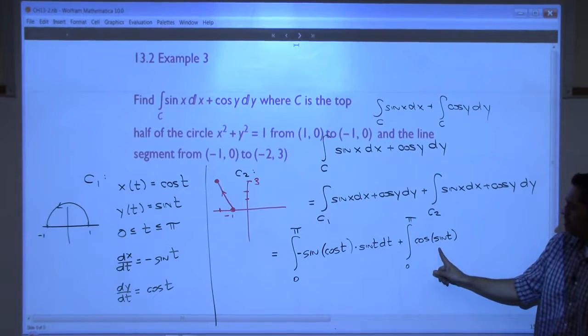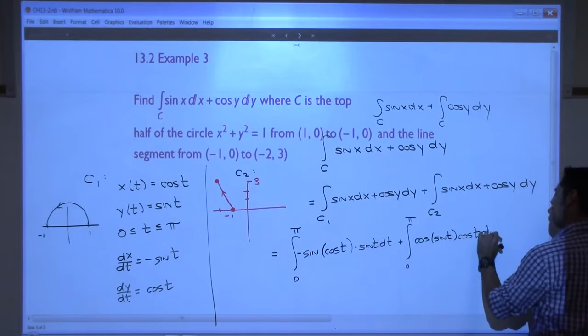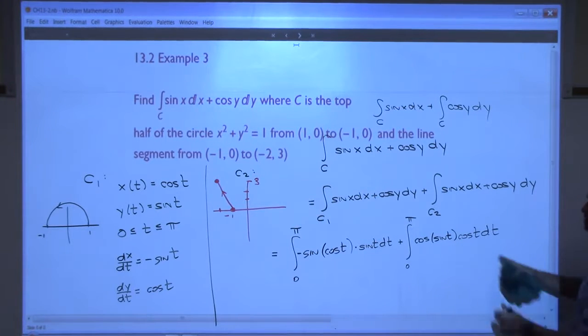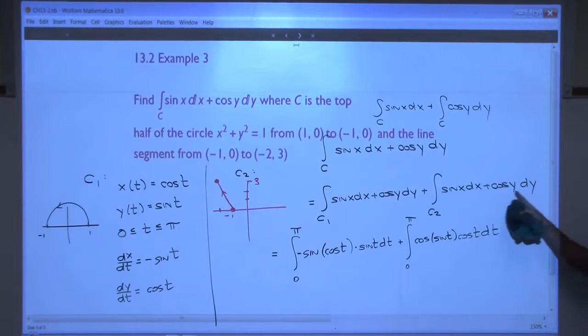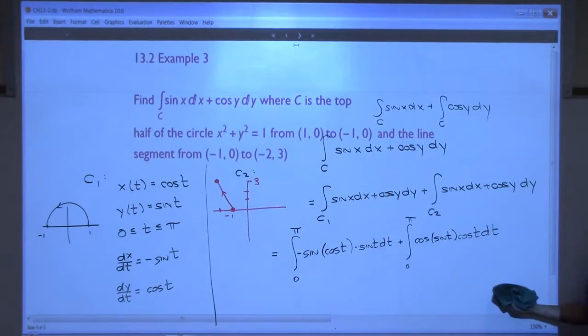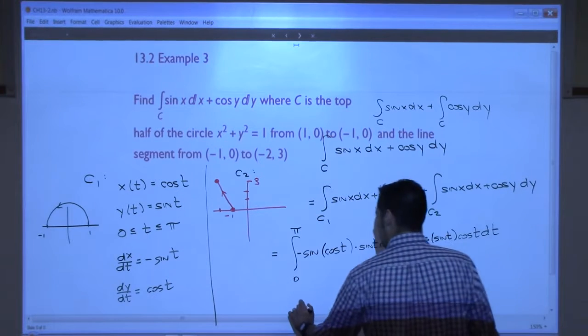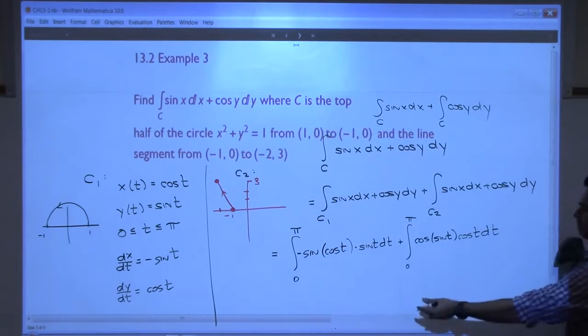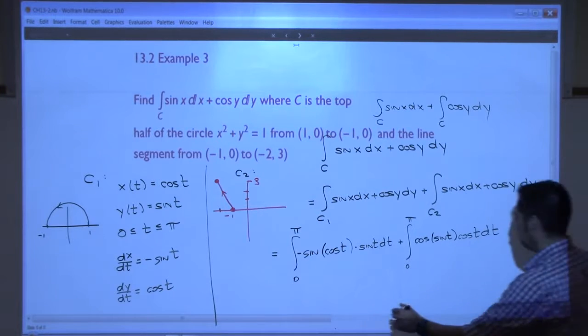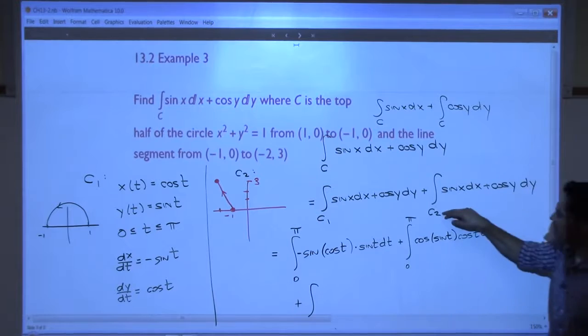This is good. What am I missing? Cosine t. Dt. Then, plus, now I've got to do this one. The difference between this one and that one is we're on a different curve now. So, I guess I'll continue below this. Is that all right? Or above it? Below?